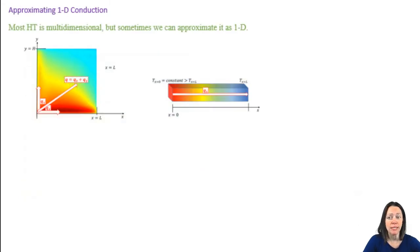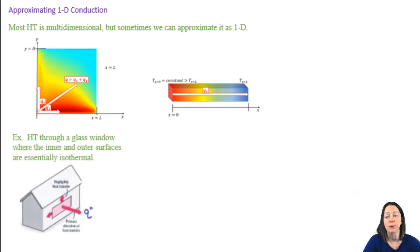We've mentioned that most heat transfer is multidimensional, but we can often approximate it as one-dimensional. So when can we make the approximation that heat transfer is one-dimensional? When the temperature only changes in one direction. For example, heat transfer through a window or wall of a house is approximately one-dimensional since the temperature gradient will only be changing from the interior to the exterior.